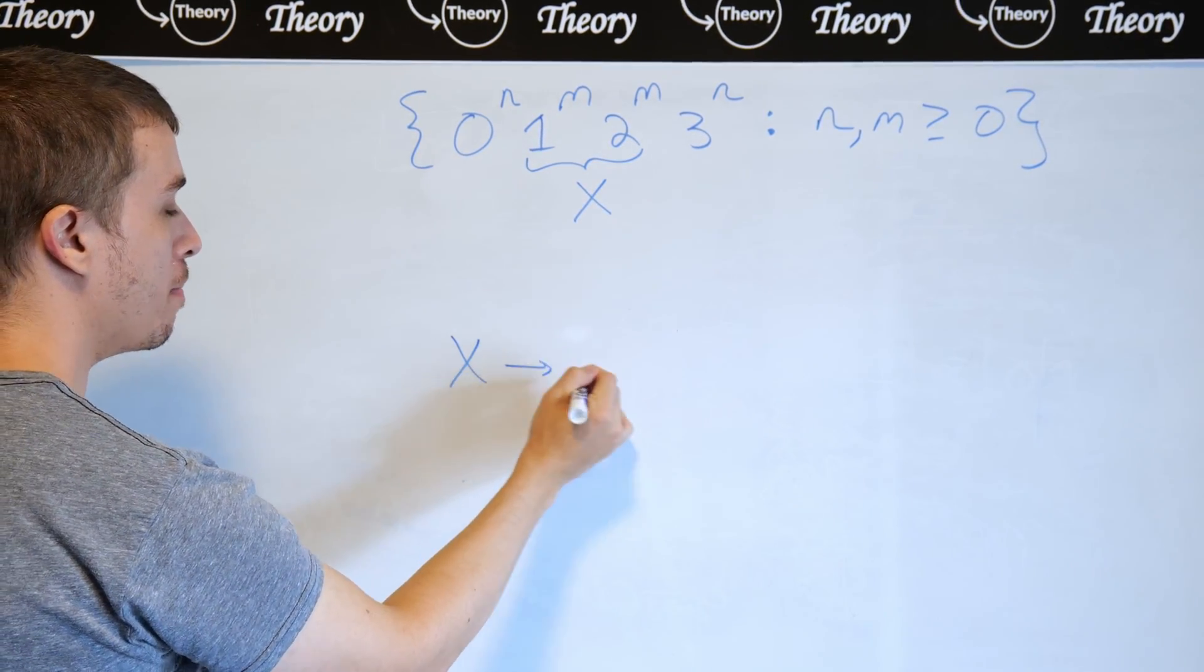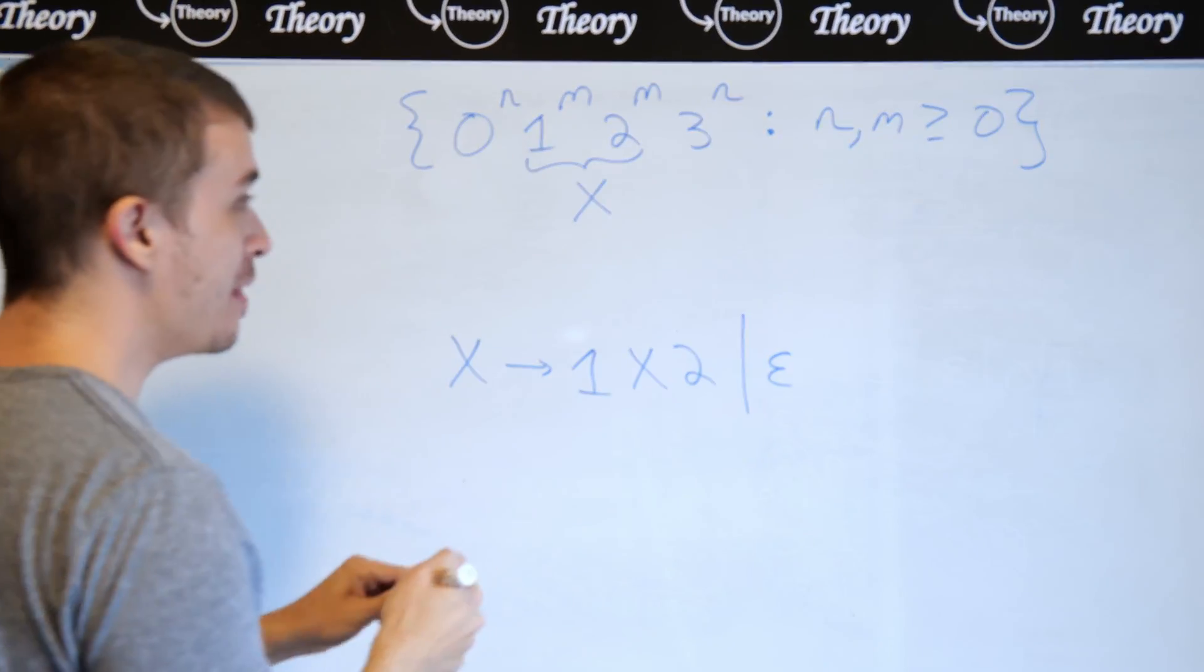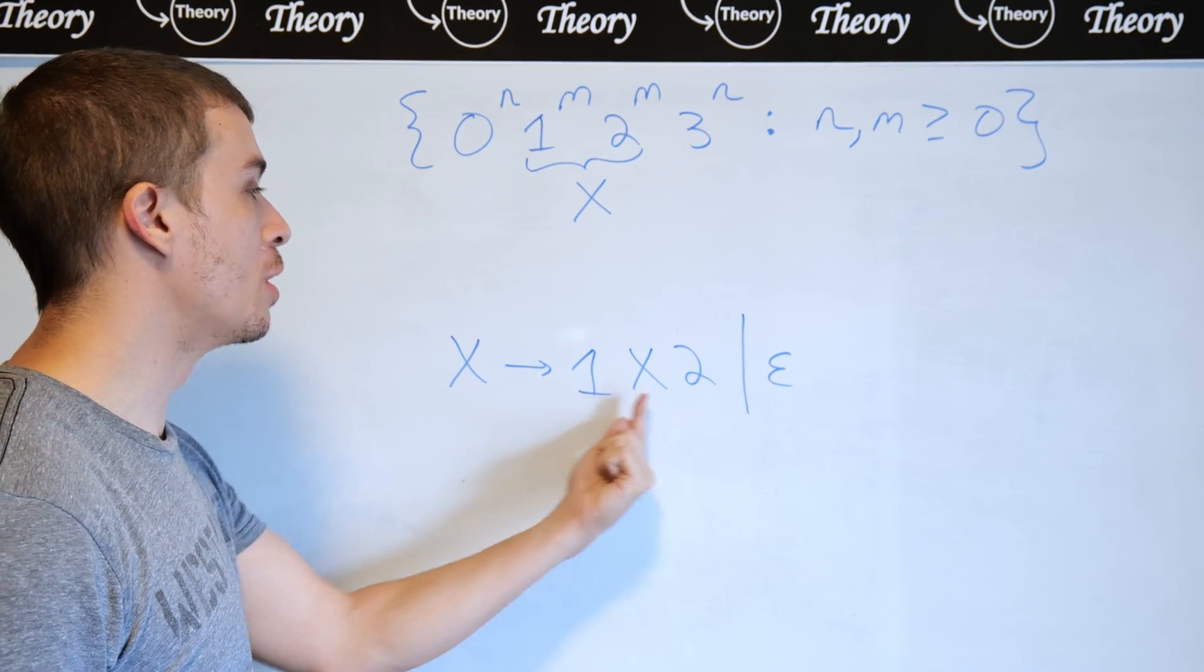So x is going to make 1 x 2 or empty, and that's essentially the same thing as zeros and ones again, but instead I'm substituting one and two here.